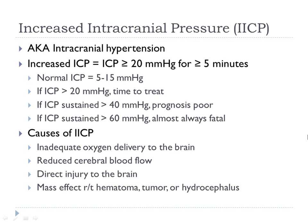Your first intervention if the ICP is elevated is to raise the head of the bed — it's really simple and can often fix the problem, promoting venous drainage. As the ICP continues to rise — 40, 60, I've seen ICPs over 100 — that patient does not have a very good prognosis. If there is sustained increased intracranial pressure at 20 or greater, the brain is becoming ischemic. Inadequate oxygen delivery to the brain will cause decreased blood flow.